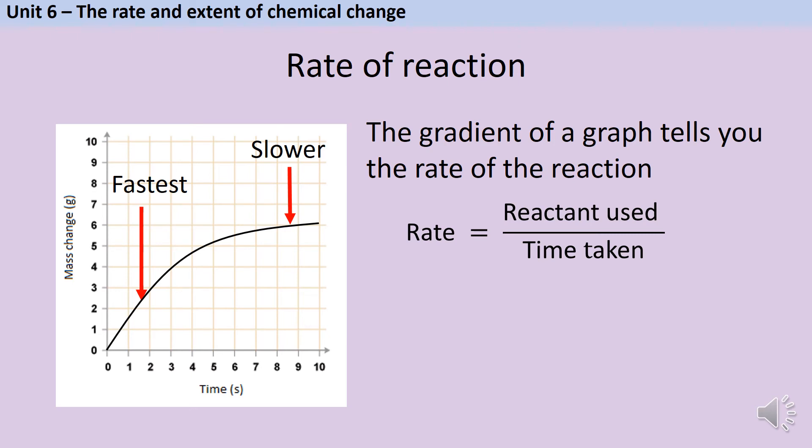For a reaction like this, there are two mathematical things I might be asked to do. The first one is to work out the mean rate of reaction. Over that entire 10 second period, what's the average rate of reaction? I do this by taking the start and the end of the line, and not really worrying about the fact that the gradient changes in between. So over the course of this reaction, the mass change is 6, and the time taken is 10. So my mean rate of reaction will be 6 divided by 10, which is 0.6 grams per second.